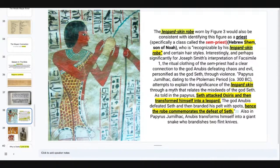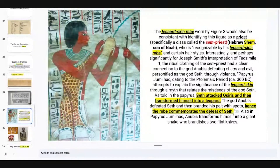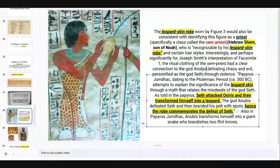Interestingly, and perhaps significant for Joseph Smith's interpretation of Facsimile I, the ritual clothing of this priest had a clear connection to the god Anubis — also known as the Opener of the Ways, and depicted as a black dog. He defeats chaos and evil, and is personified as the god Seth through violence.